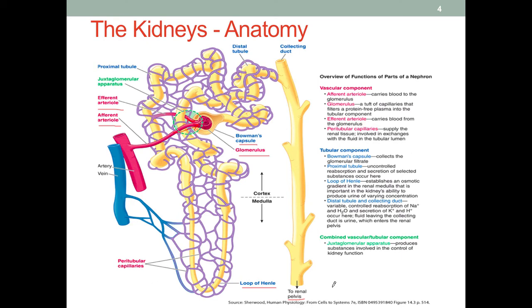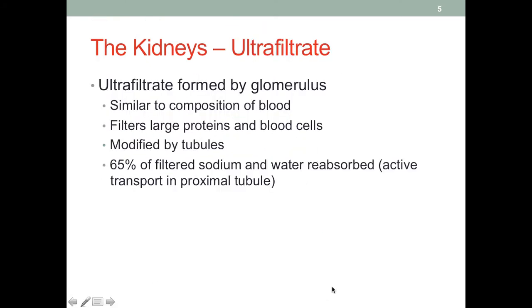For example, carbon dioxide, among other things, is removed this way. This process also contributes to the buffer system to help keep our internal pH value within a relatively constant range. This slide summarizes what we just talked about — the structure and function of the glomerulus and the nephron.